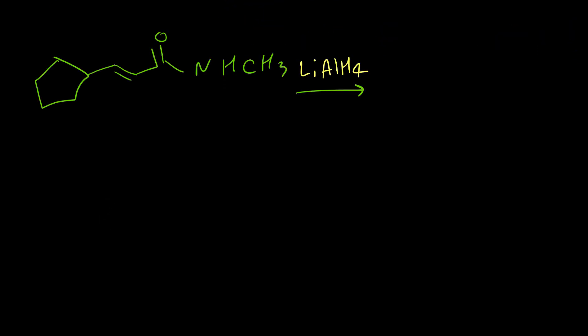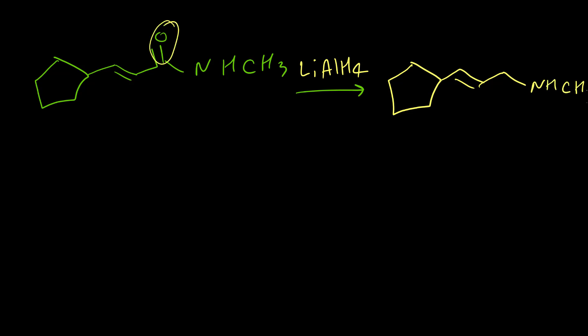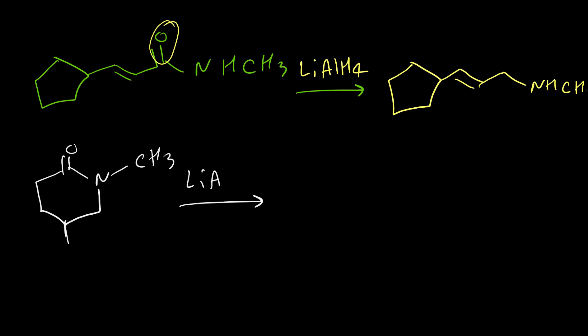Examples of amide reduction with LiAlH4: we rewrite the whole structure but replace the C=O with CH₂ — the product is the amine without the double bond to oxygen. A second example similarly gives the whole structure written without the carbonyl oxygen.